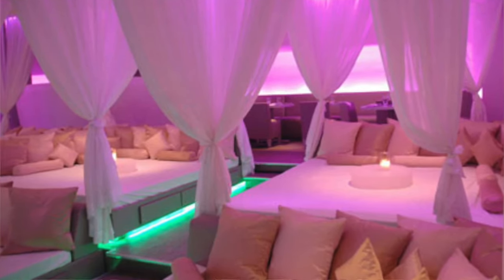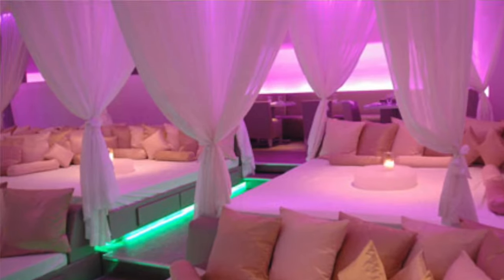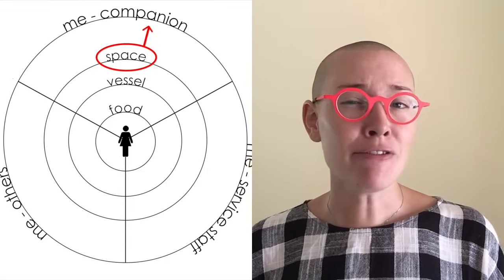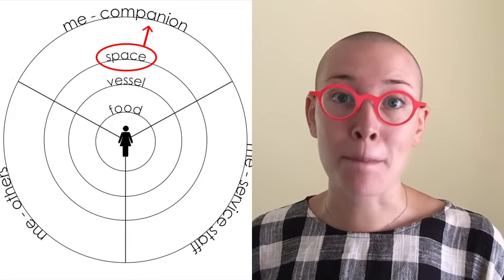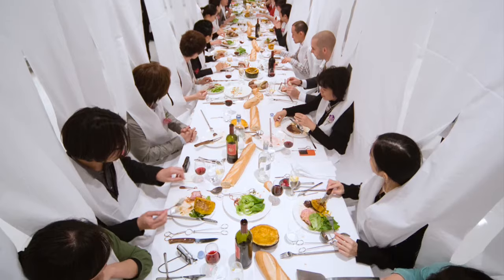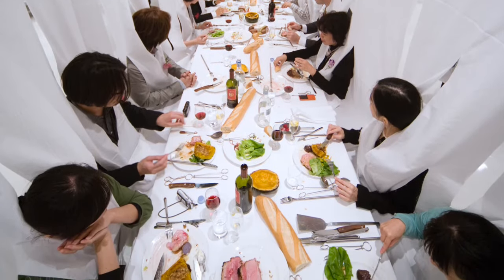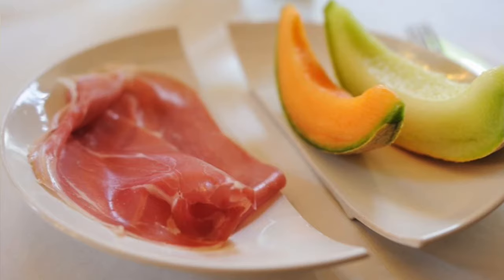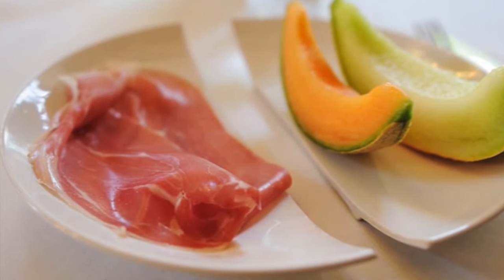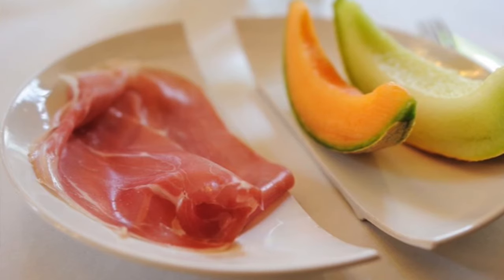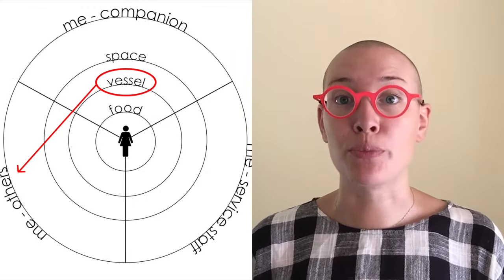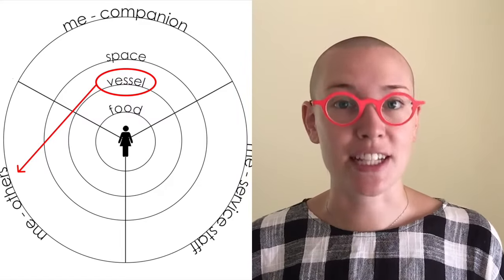Take for example the duvet restaurant, where you eat laying on beds instead of sitting on chairs and tables. That space influences your interaction with your companion for sure. Mariah Vogelsang used half plates at her Christmas dinner — two half plates with the same food on one side of the table and two with different food on the other side. Guests had to swap half of their plate in order to have the complete dish. This vessel changed the interaction between the person and the others eating around.